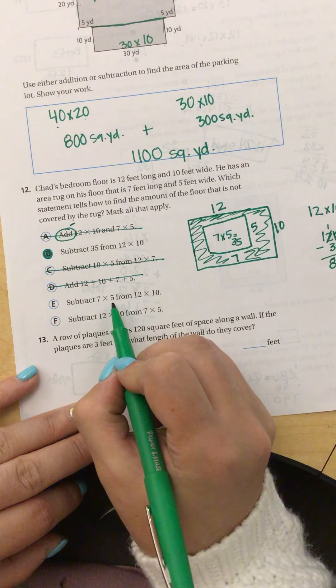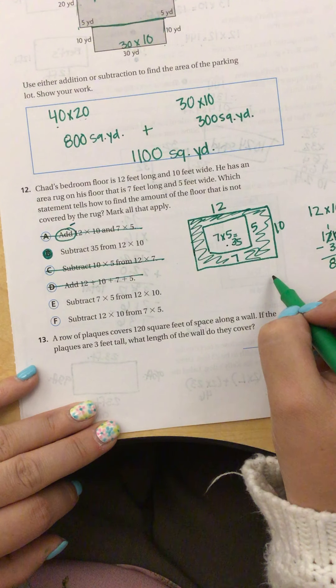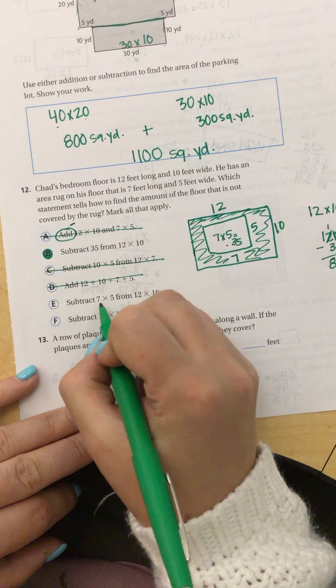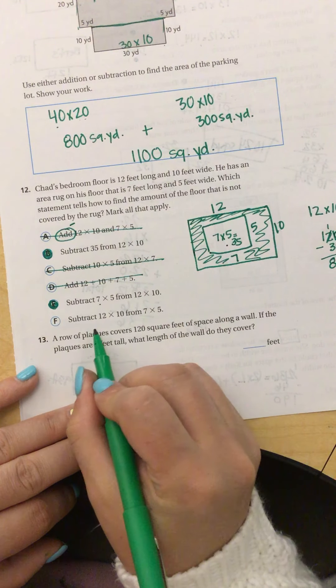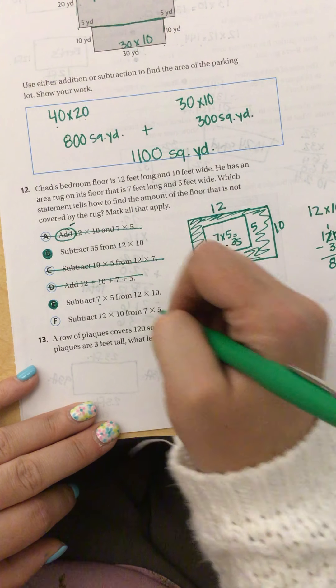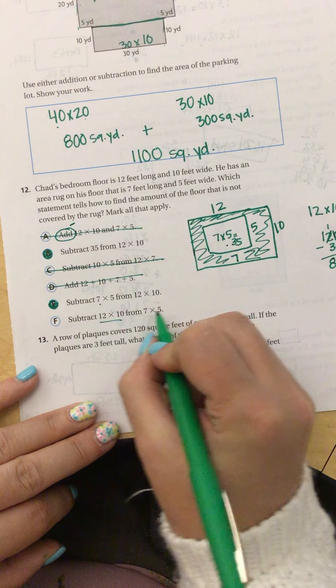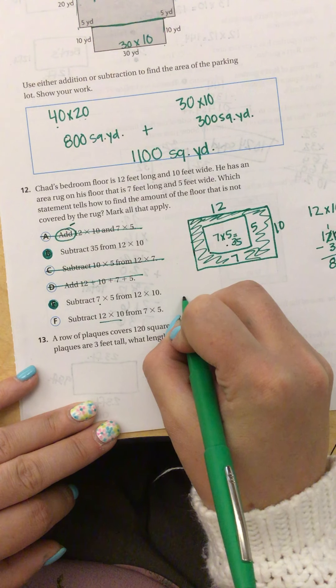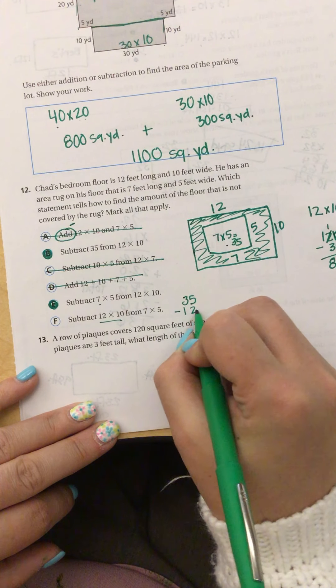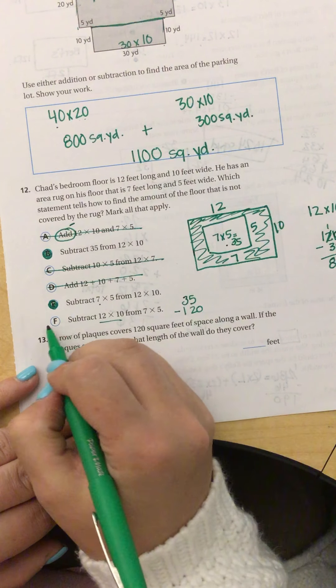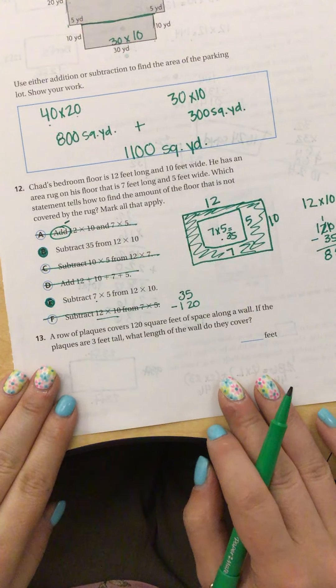Subtract 7 times 5 from 12 times 10. Yes, I would take the smaller number away from the bigger area. Subtract 12 times 10 from 7 times 5. That is wrong because you cannot take a bigger number away from a smaller number. That is saying that I have 35 and I'm going to subtract 120 from that. And we cannot take a bigger number from a smaller number.